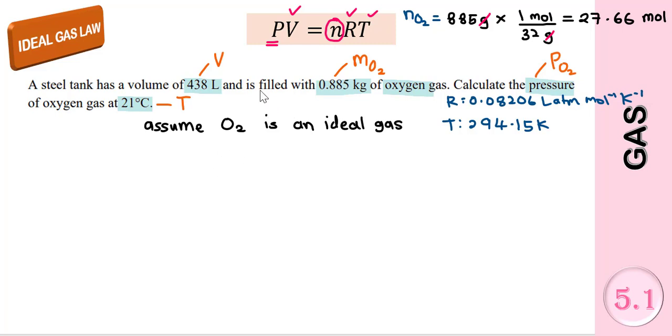When we have converted everything, then we can use this formula. Then we can substitute all the values into this formula. The pressure here, we want the pressure of the oxygen gas.